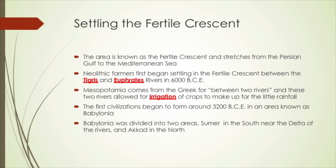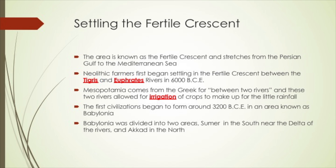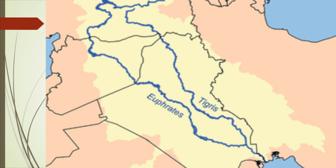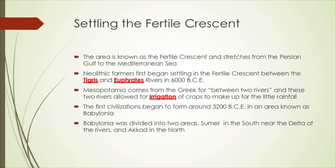This region of the world has many different names. One of the names is the Fertile Crescent, because the area is shaped somewhat like a crescent and stretches from the Persian Gulf all the way to the Mediterranean Sea. Neolithic farmers first began settling in the Fertile Crescent between the Tigris and Euphrates rivers around 6000 BCE. The word Mesopotamia comes from the Greek words that mean 'between two rivers.' Early settlers found that it was very good for irrigation of crops, because the area often had very little rainfall.